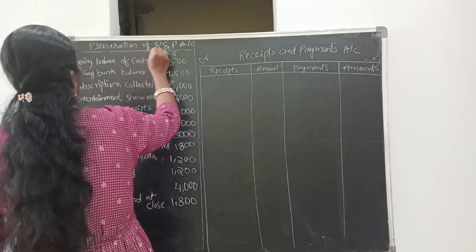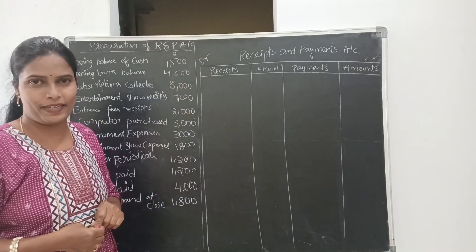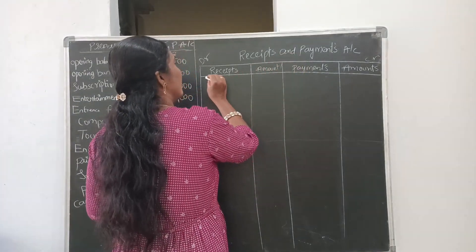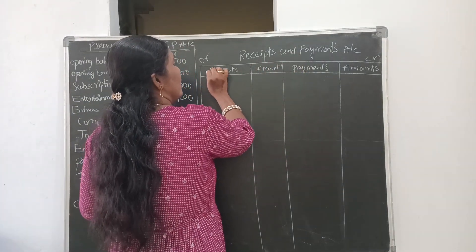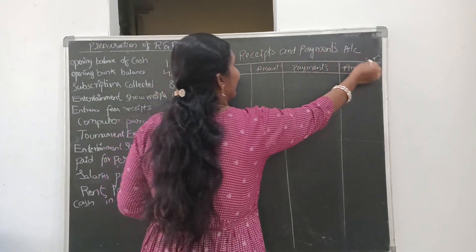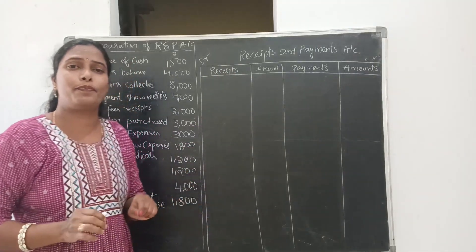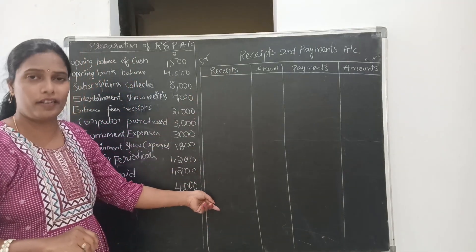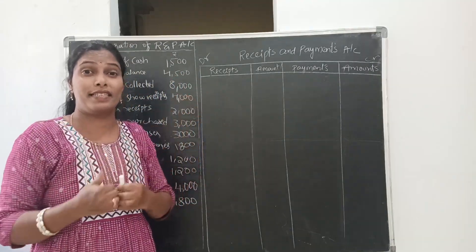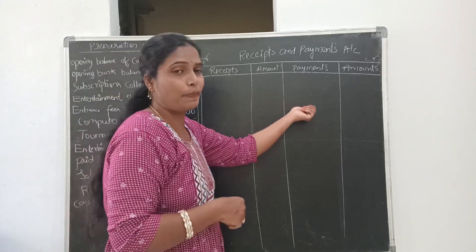This is the format of the Receipt and Payment account. According to this format: Receipts on the debit side and Payments on the credit side. All receipts we will post on the debit side and all payments on the credit side — whatever the business receives goes to the debit side, and whatever the business pays goes to the credit side.